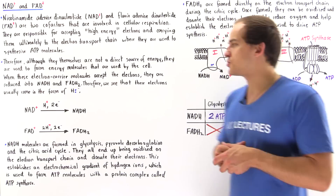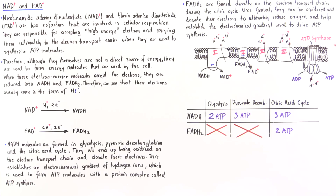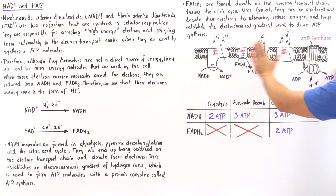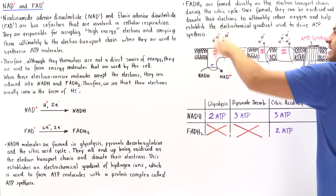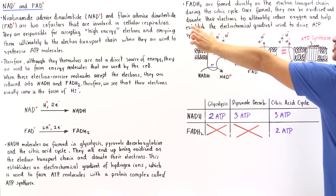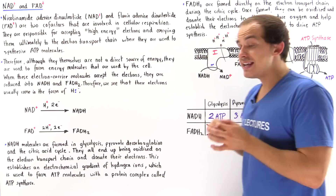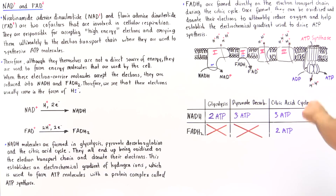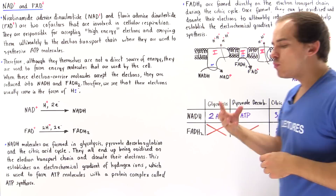The electron transport chain is found in the inner phospholipid bilayer membrane of the mitochondria. We have the mitochondrial matrix, the inner membrane, the intermembrane space, and the outer mitochondrial membrane. The electron transport chain is a series of four protein complexes — complex 1, 2, 3, and 4 — as well as a protein complex known as ATP synthase.